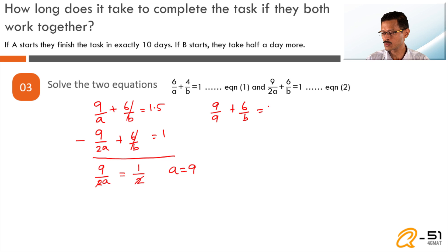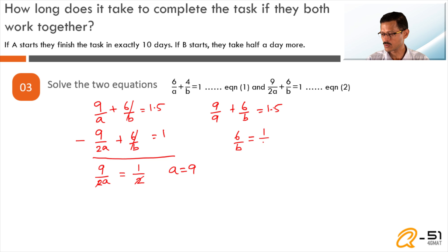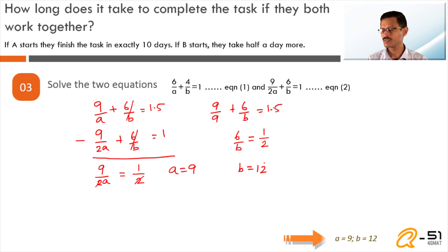Plugging a = 9 back into the multiplied Equation 1: 9/9 + 6/b = 1.5, so 1 + 6/b = 1.5, giving 6/b = 0.5 = 1/2. Cross-multiplying: b = 12. So a = 9 and b = 12.